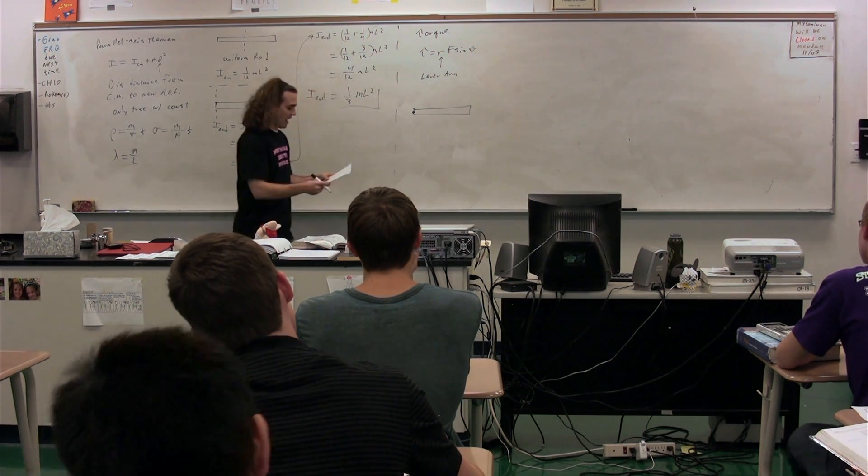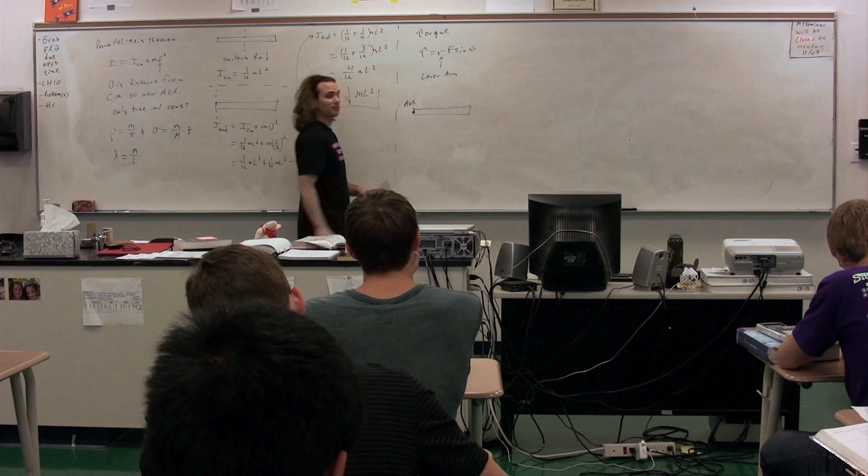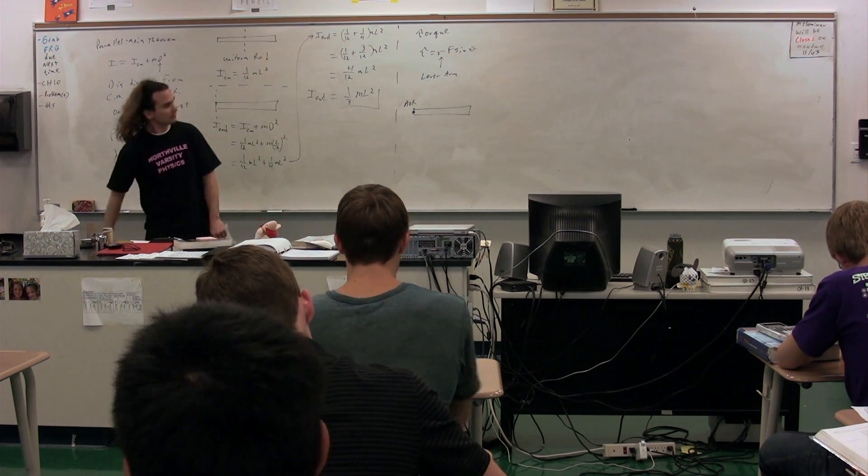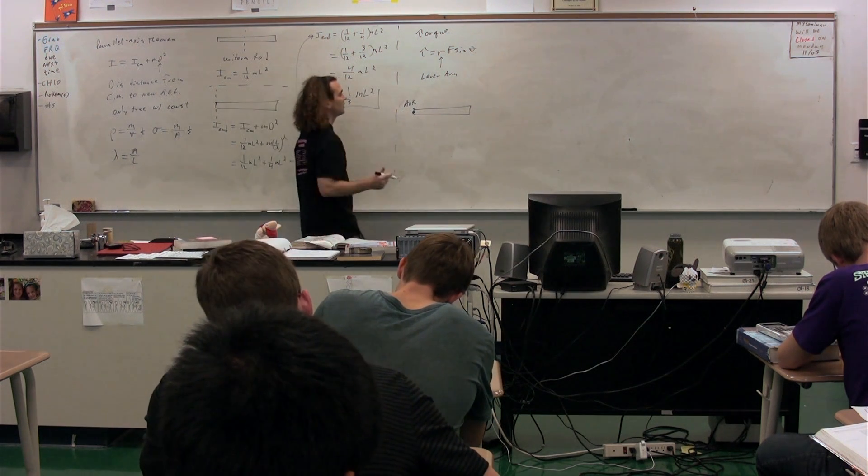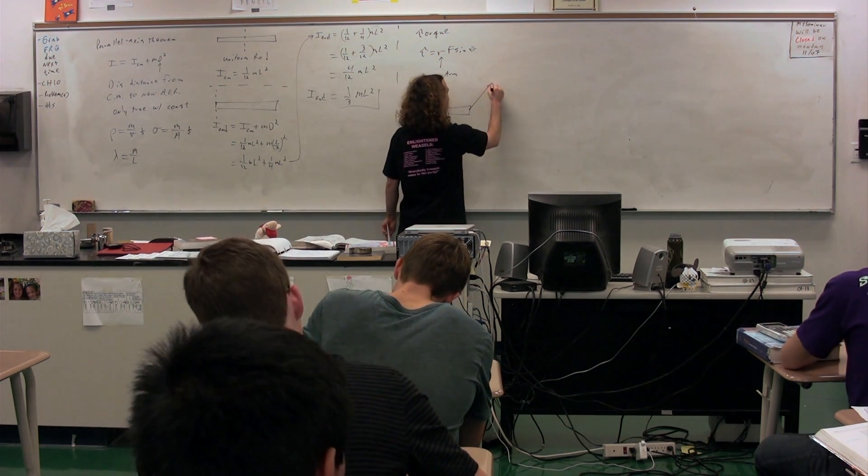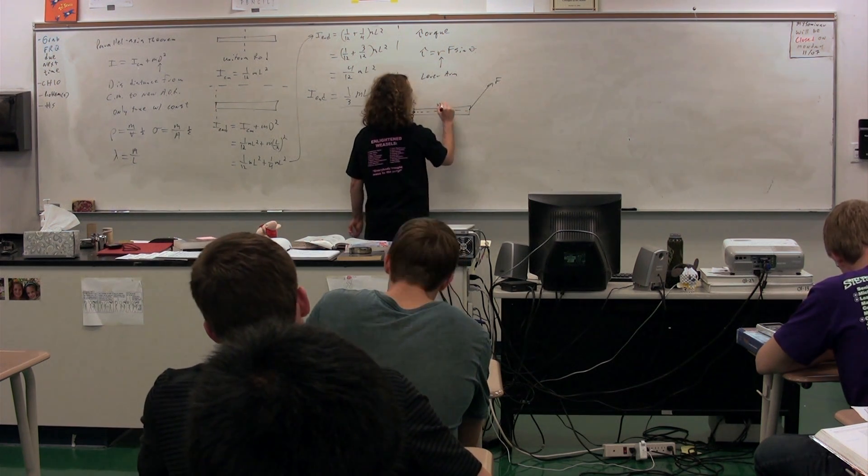So we have our axis of rotation, for example, would be right here. If this is the door, we would be looking at the door from the top view. This would be the hinge of the door. This would be the force. This right here would be called the lever arm.